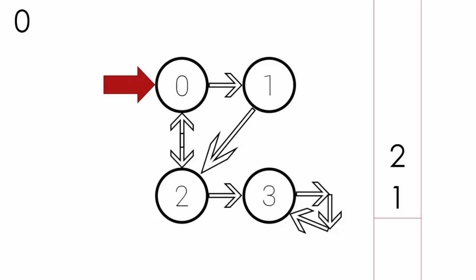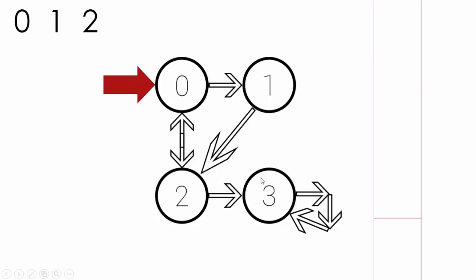The next step is, after putting elements in the queue, we dequeue the first element we put in — so we dequeue 1. Once we dequeue 1, we check which routes are available from 1. From 1 there is only one route, which is to 2, and 2 is already in the queue so we don't need to put it again. Next we dequeue 2 and check what routes are available from 2 — from 2 only the route to 3 is available, so we put 3 inside the queue.